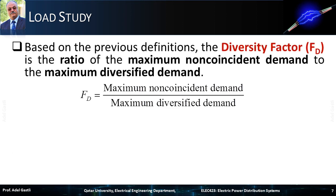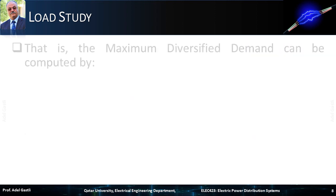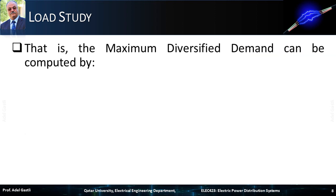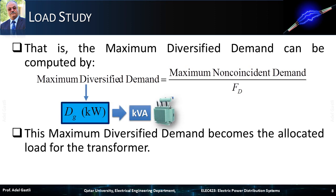Based on the previous definitions, the diversity factor FD is the ratio of the maximum non-coincident demand to the maximum diversified demand. When the diversity factor is available, it is possible to determine the maximum diversified demand of a group of customers, such as those served by a distribution transformer. The maximum diversified demand can be computed by calculating the ratio of the maximum non-coincident demand to the diversity factor. Hence, this maximum diversified demand becomes the allocated load for the transformer, after dividing the kilowatt demand by the average power factor of the total load.